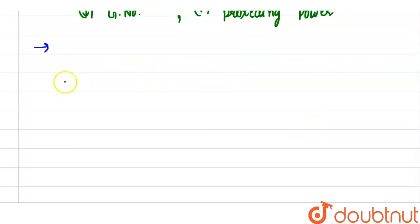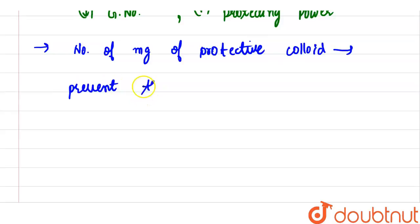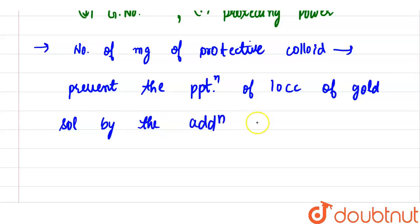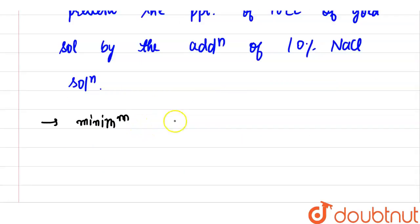We know that gold number can be defined as the number of milligrams of protective colloid required to just prevent the precipitation of 10 cc of gold sol by the addition of 10% sodium chloride solution.